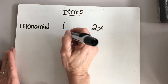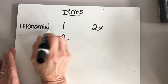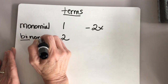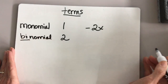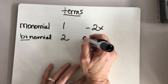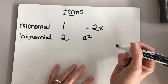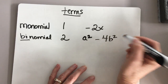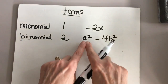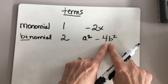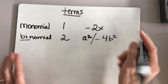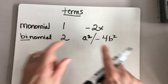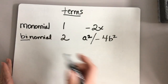Two terms has another name, and we use the same base name — it's a binomial. Two terms would be, for example, a squared minus 4b squared. Two terms: this is one term and this is another term. We can kind of separate it out and they're different terms because they look different. So this would be two different terms.